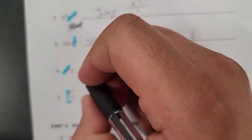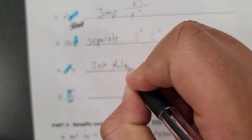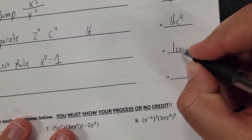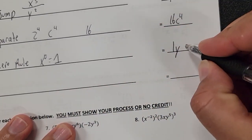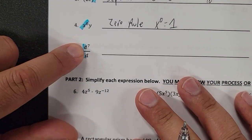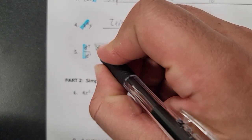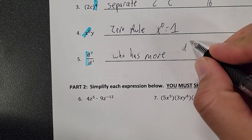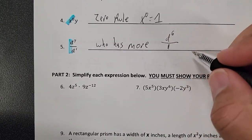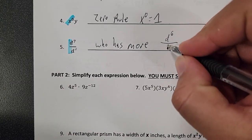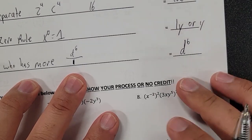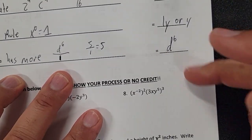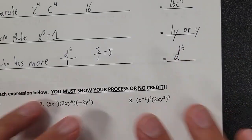Over here we have the zero rule. Anything raised to zero — so the zero rule means X raised to zero equals 1. We're not going to do anything to the Y. So it's really just 1Y, but you don't need to put the 1 there — it can just look like Y by itself. Right here, if you have the same letter on top and bottom, remember to put a little 1 when the exponent is missing. The top has more, so it'll be D to the sixth power. When it's divided by 1, just write D to the sixth — same as 5 divided by 1 equals 5.